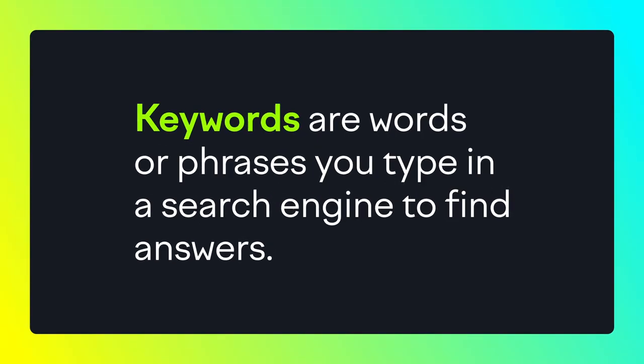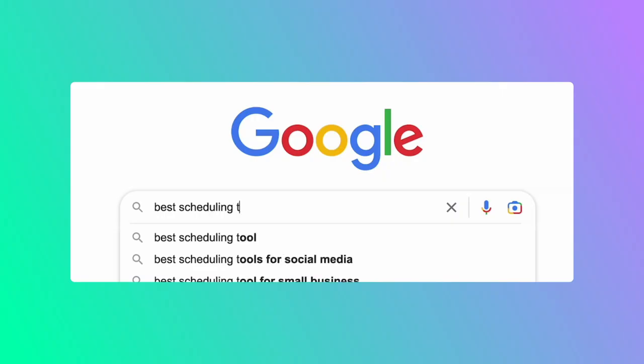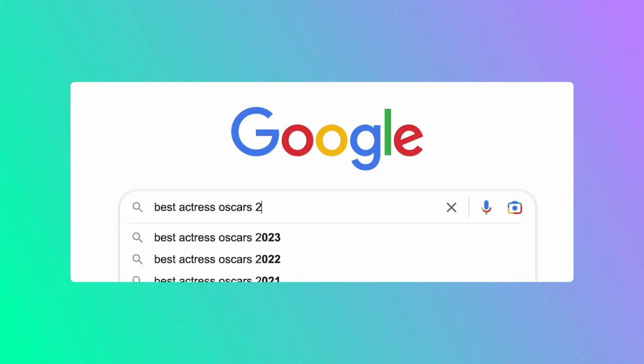Before I move along, I want to define some key terms relevant to content-led SEO. First, what is a keyword? Keywords are words or phrases you type in a search engine to find answers. For example, if I wanted to look for a scheduling tool, I may search 'best scheduling tool' on Google. However, some keywords are more popular than others, which makes them more valuable.